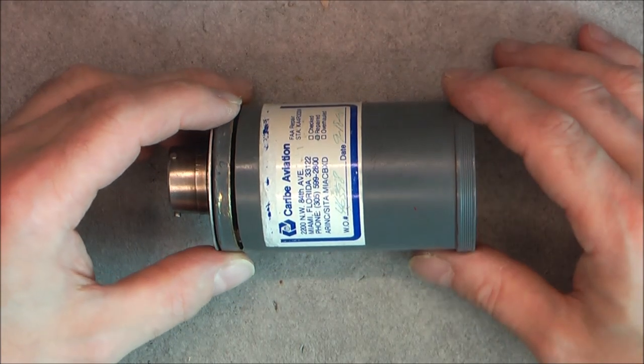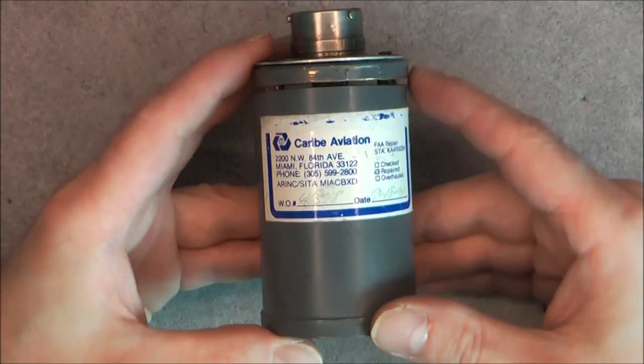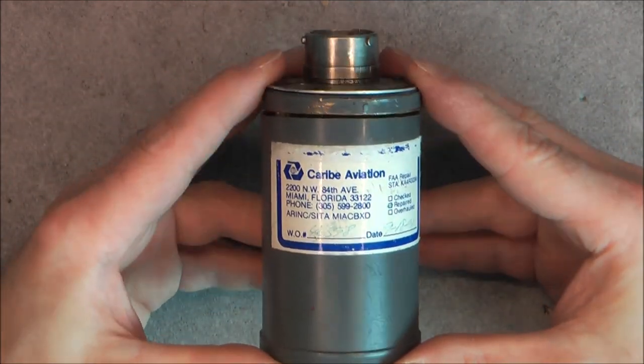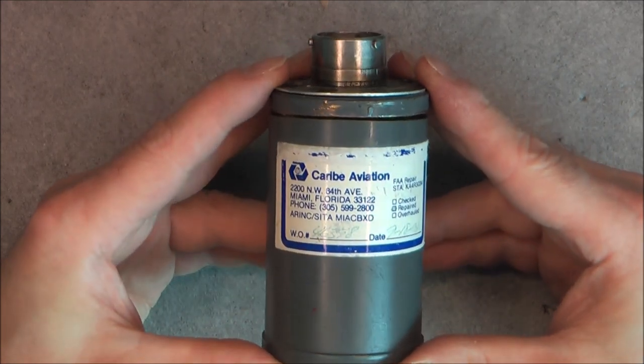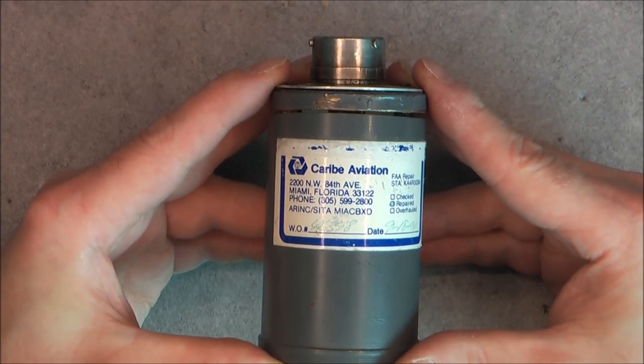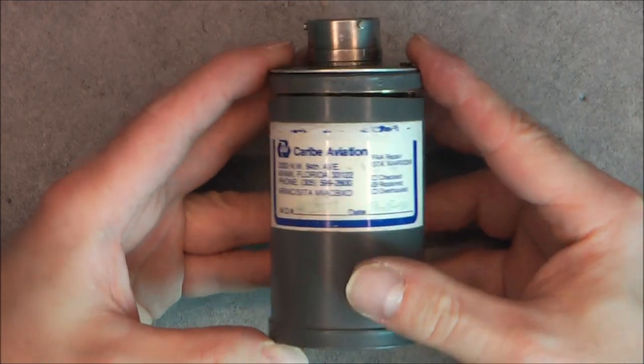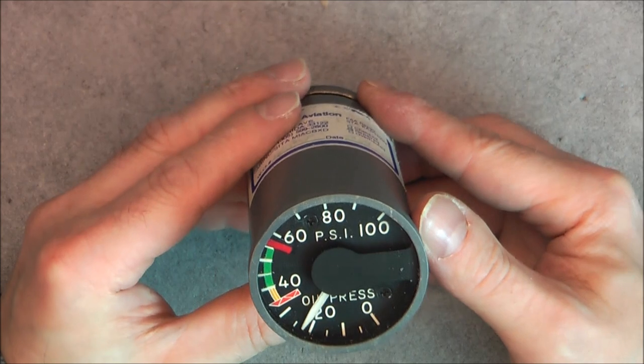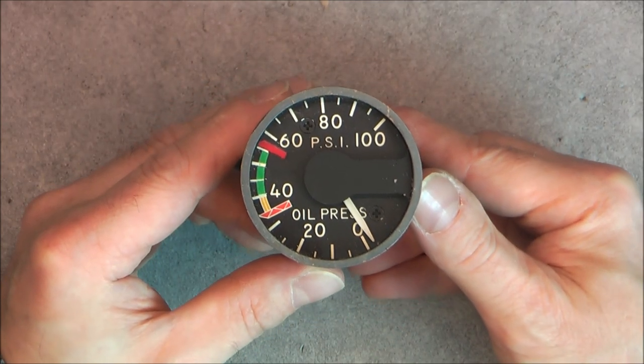Hi, today a super quick teardown of an instrument from my stock - an airliner instrument, by the way. First, it was maintained by Caribe Aviation in Miami, Florida in '91. We have here a PSI oil pressure indicator up to 100 PSI.